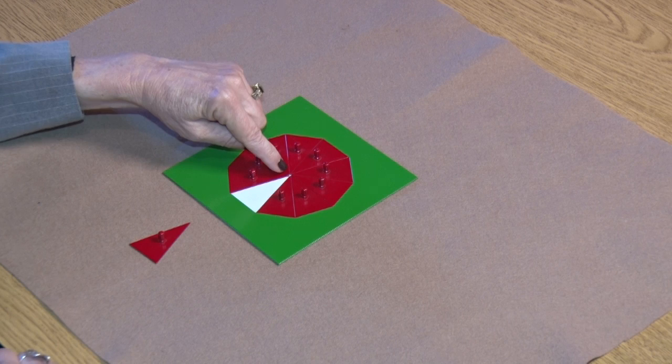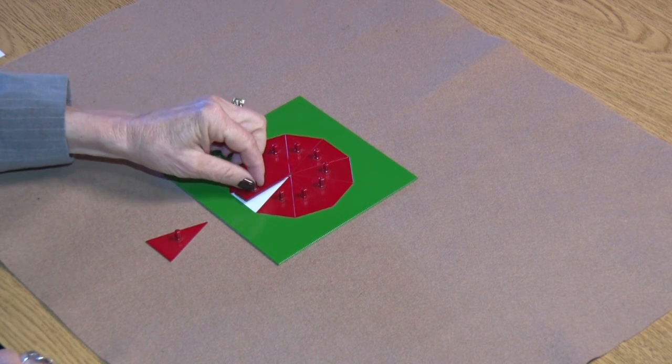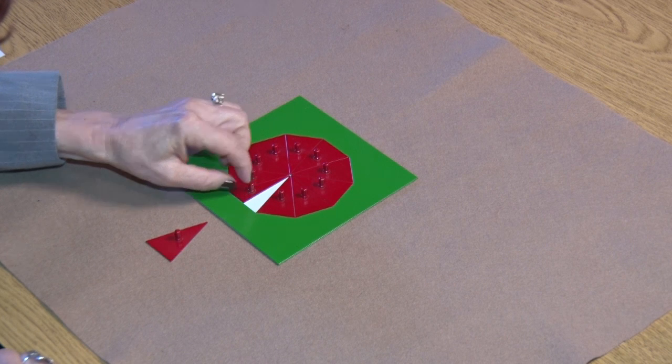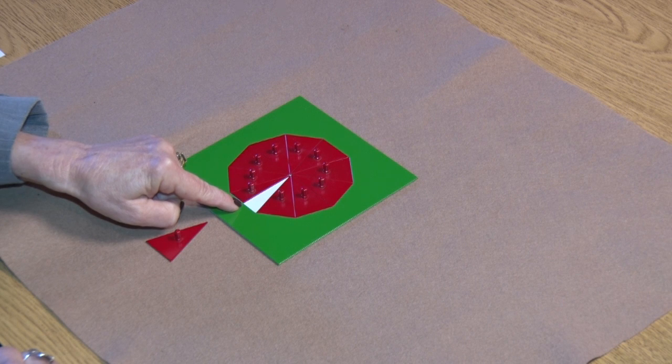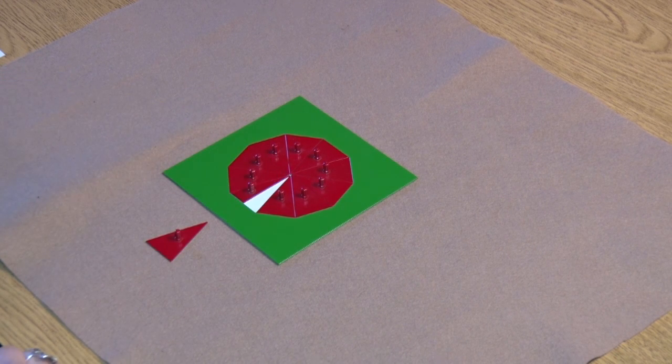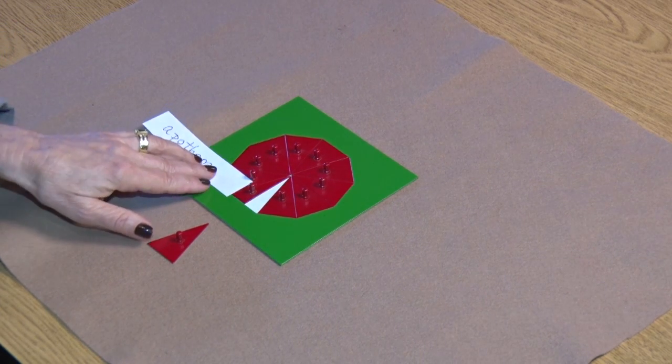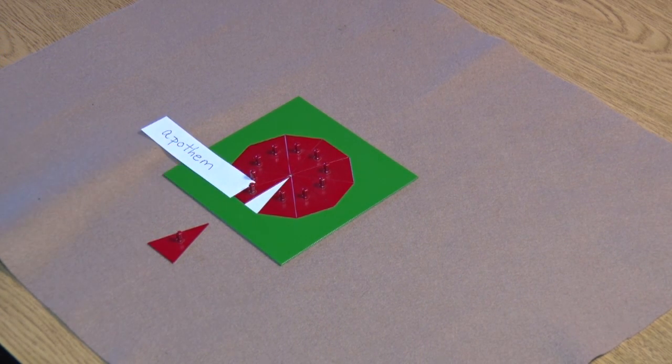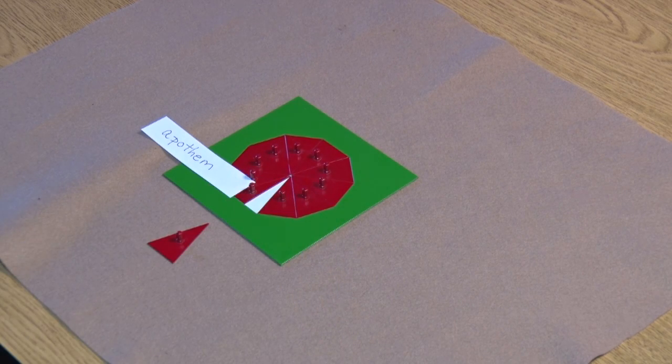And if we draw a vertical line from that center point to the midpoint of the side, any one of its sides, we get a new line which is called the apothem. The apothem is a perpendicular line from the center to the midpoint of the side of a regular polygon.